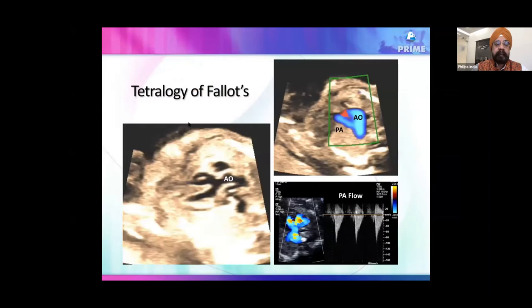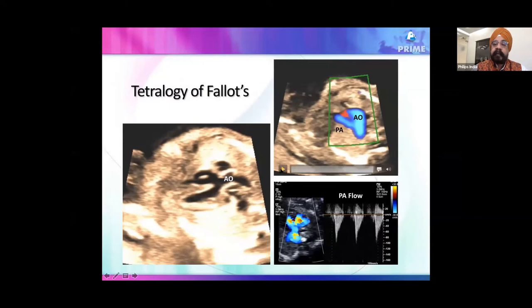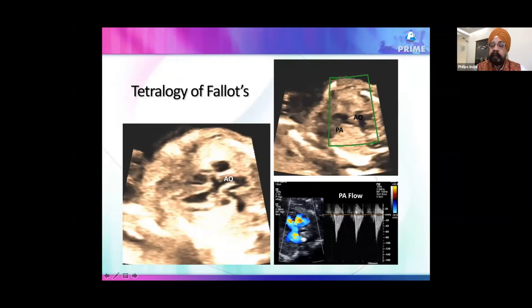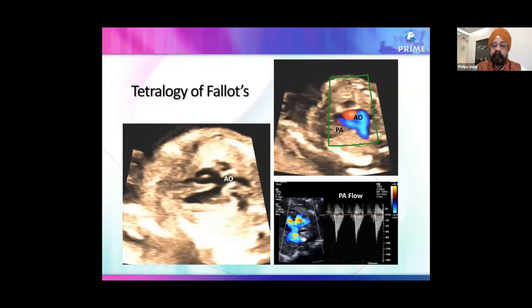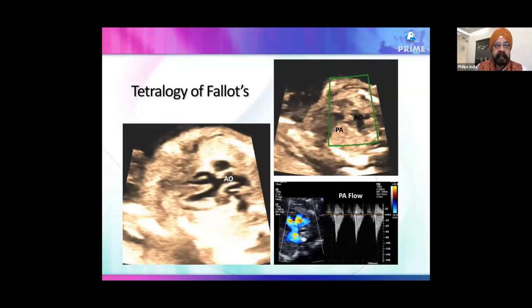In tetralogy of Fallot, you can see the LV, RV, overriding aorta, and a large VSD in the fetal echo. The pulmonary artery is small, but you see little gradient — barely over 1 meter per second velocity. The diagnosis of pulmonary stenosis in tetralogy of Fallot is made by the size of the pulmonary artery, not the gradient.